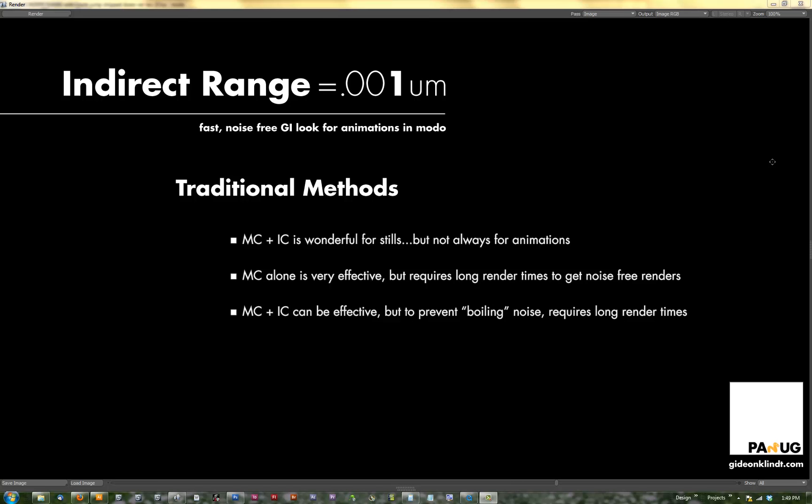I use Monte Carlo plus Irradiance Cache all the time for illustration stills and other still imagery. It works really great, looks beautiful, and you can get away with lots of different settings. You can go pretty low since you're not animating it, so none of the noise shows up — and every once in a while we'll even paint out a little bit in Photoshop. That's not really an option if you're doing a long animation without an army of rotoscopers. The second option is Monte Carlo alone — it's very effective, but you're going to get exceptionally long render times trying to get rid of the noise, which is a salt and pepper kind of noise.